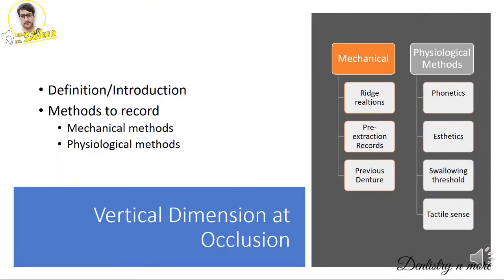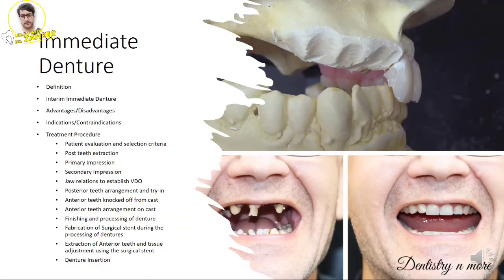Vertical dimension at occlusion is when the patient bites into maximum intercuspation. Write an introduction or definition, then describe the methods to record VDO. Mechanical methods are based on ridge relations, pre-extraction records, and previous dentures — having a previous denture is a great boon. Physiological methods include phonetics, aesthetics, swallowing threshold, and tactile sense. Niswonger's technique is the physiological technique most commonly used to obtain vertical dimension at occlusion.